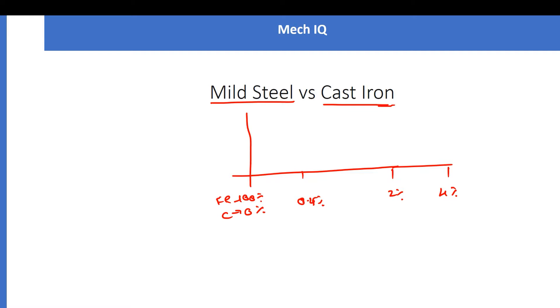Mild steel generally ranges between 0 to 0.25% of carbon in ferrous. This is called mild steel. Coming to cast iron, it exists in the 2 to 4% carbon range.